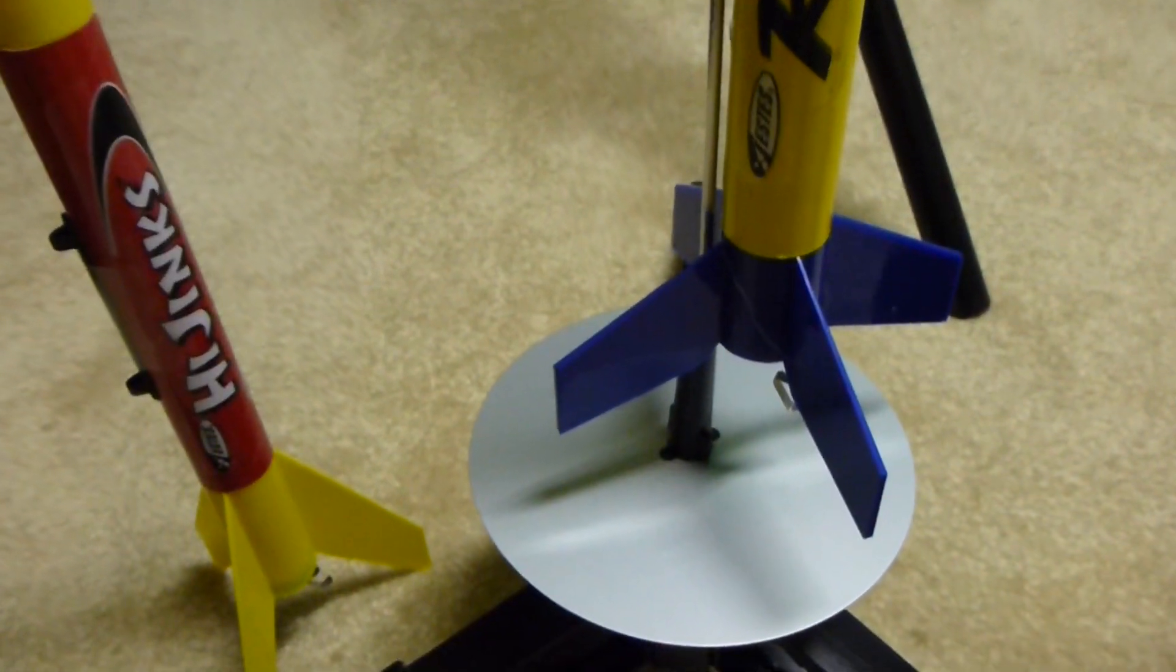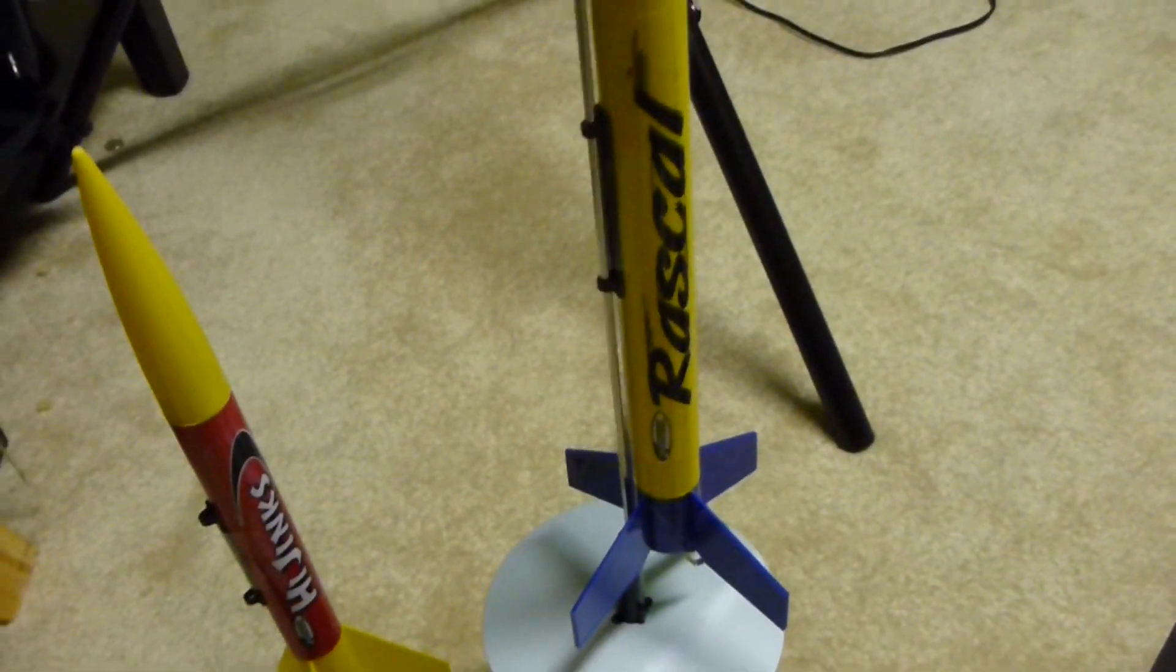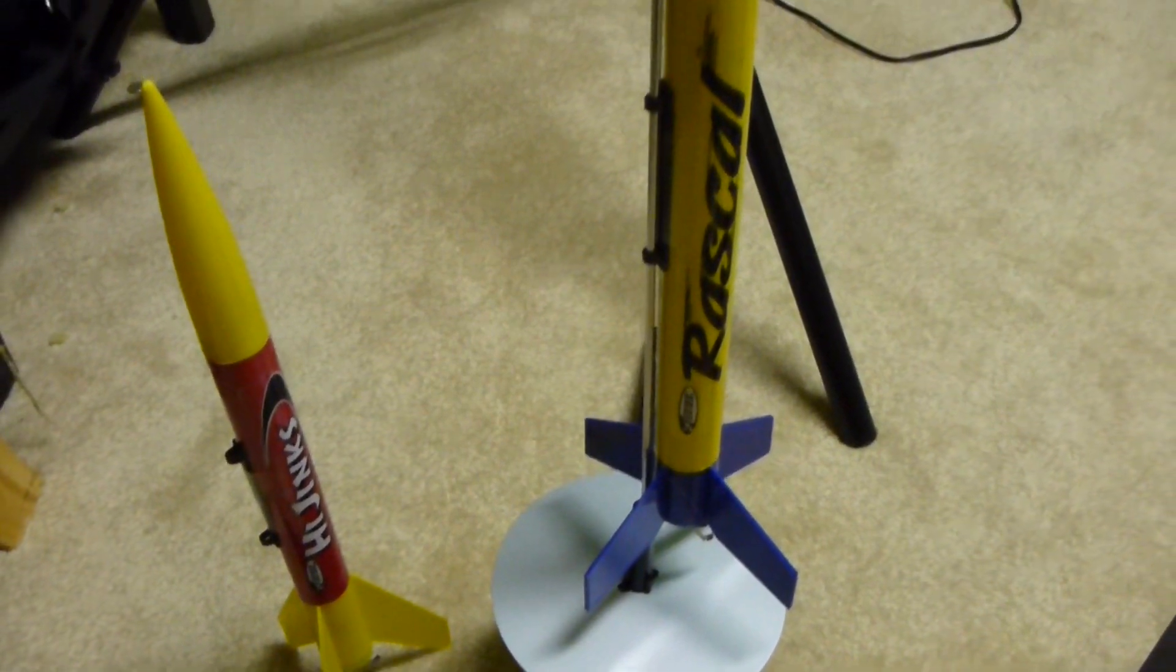There's the Rascal rocket that comes with it. As I said, it was pre-assembled. It's got plastic fins, cardboard body, plastic cone, and it comes with a parachute. Now you did have to attach the parachute. That's the only piece that wasn't pre-assembled, but it's easy to put in.